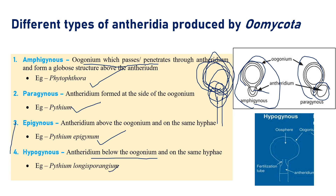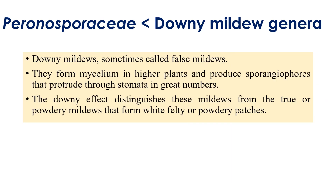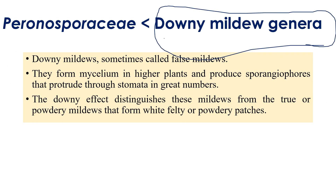Two most important things to remember for examinations: amphigynous type — oogonium forms a globose structure above the antheridium; paragynous type — antheridium and oogonium side by side. In Peronosporales, the remaining genera — Peronospora, Sclerospora, Plasmopara, Basidiophora, Bremia, Pseudoperonospora — are all downy mildew-causing genera. The most important feature: mycelium grows inside higher plants and produces sporangiophores that protrude through the stomata, producing white downy growth visible on the lower surface.